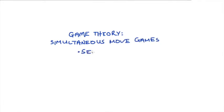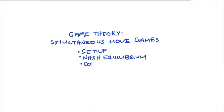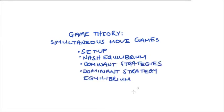I'm going to go through understanding the setup for simultaneous move games, how to find any Nash equilibrium, and whilst we go through that I'm going to discuss how to identify dominant strategies and dominant strategy equilibrium. Please check the description for timestamps for the different parts of the video if you're more interested in some of these parts rather than others.